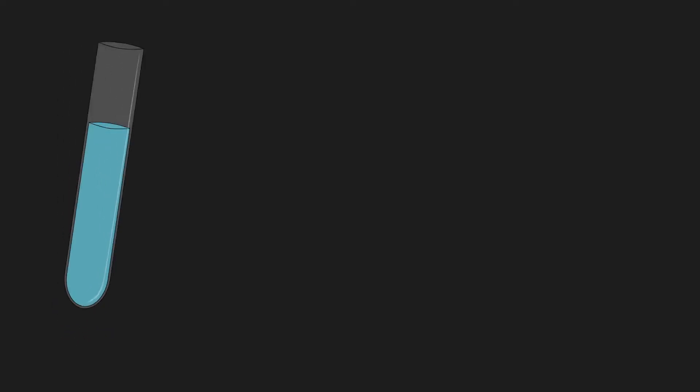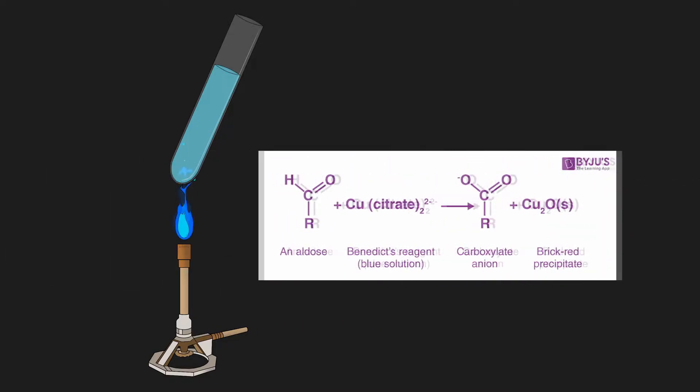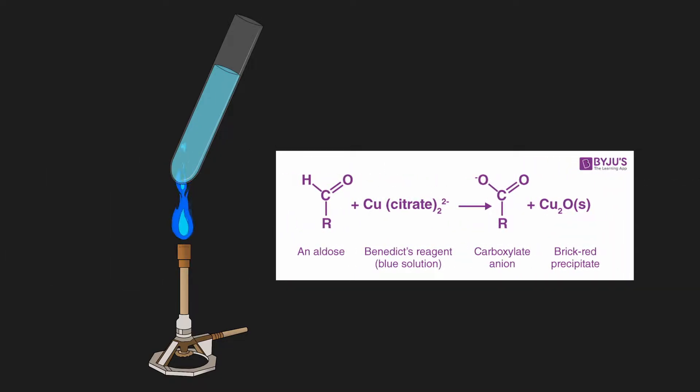When the reducing sugar in an alkaline solution is exposed to heat, it is converted to an enediol, a relatively powerful reducing agent. The free carbonyl carbons react with the oxidizing agent in Benedict's reagent.